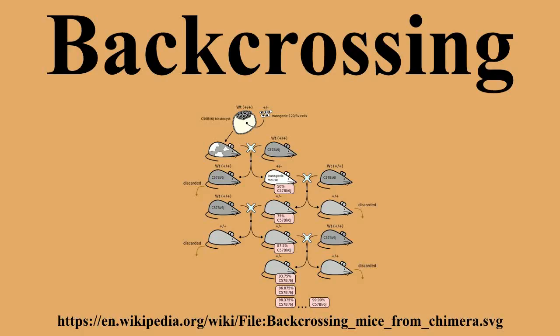For example, an F1 hybrid crossed with one of its parents can be termed a BC1 hybrid, and a further cross of the BC1 hybrid to the same parent produces a BC2 hybrid.